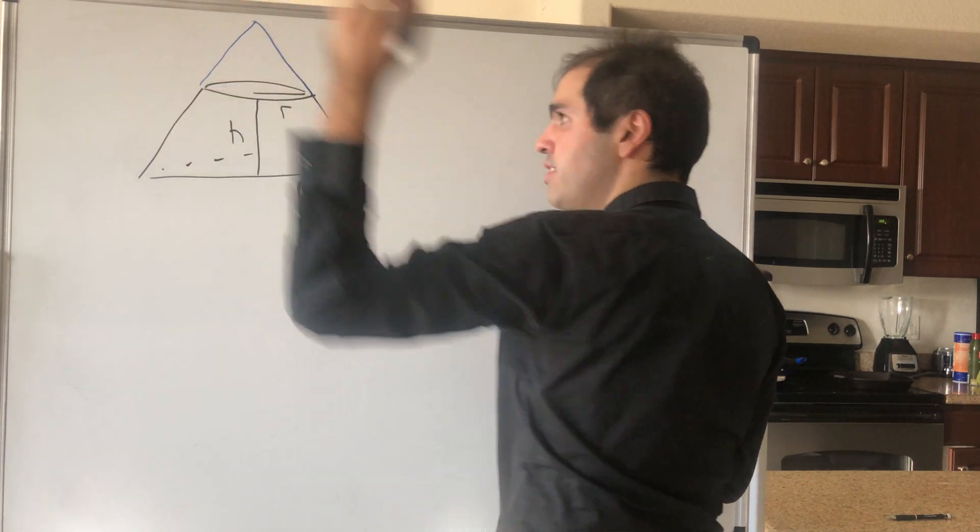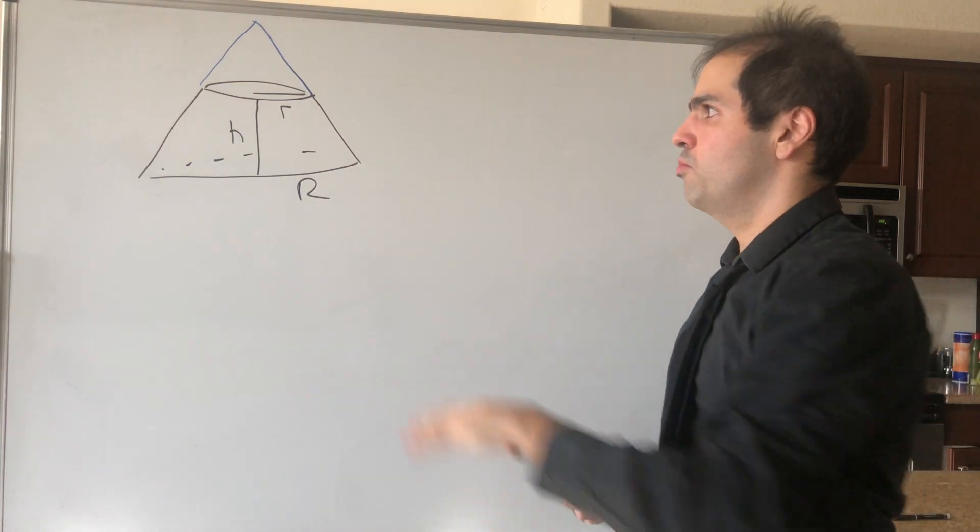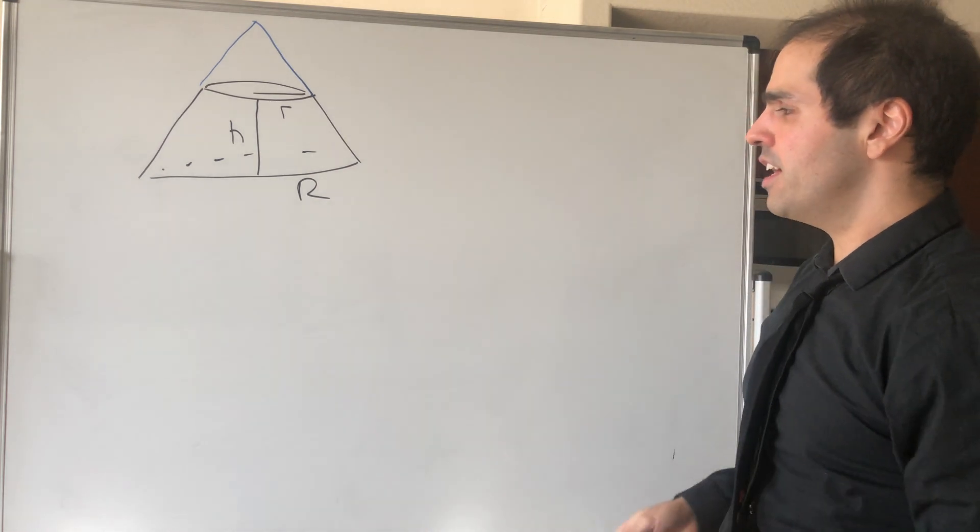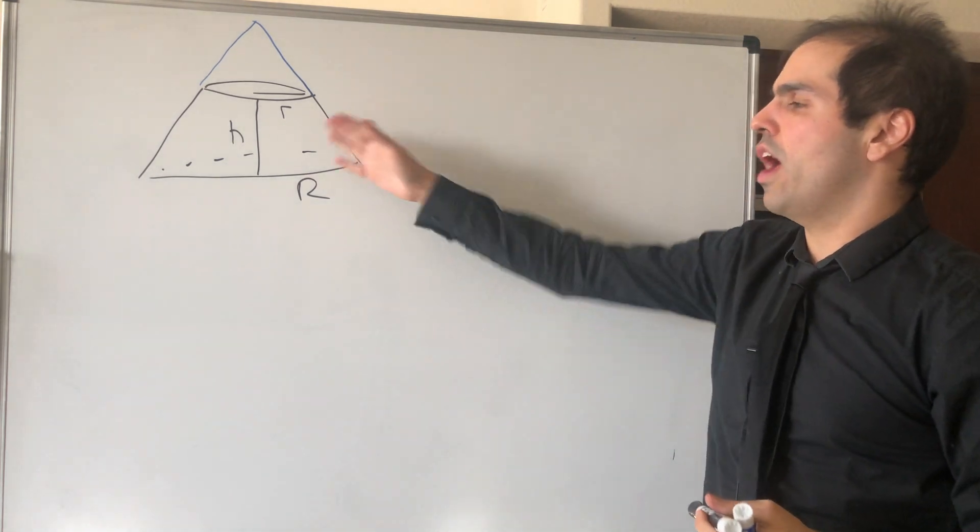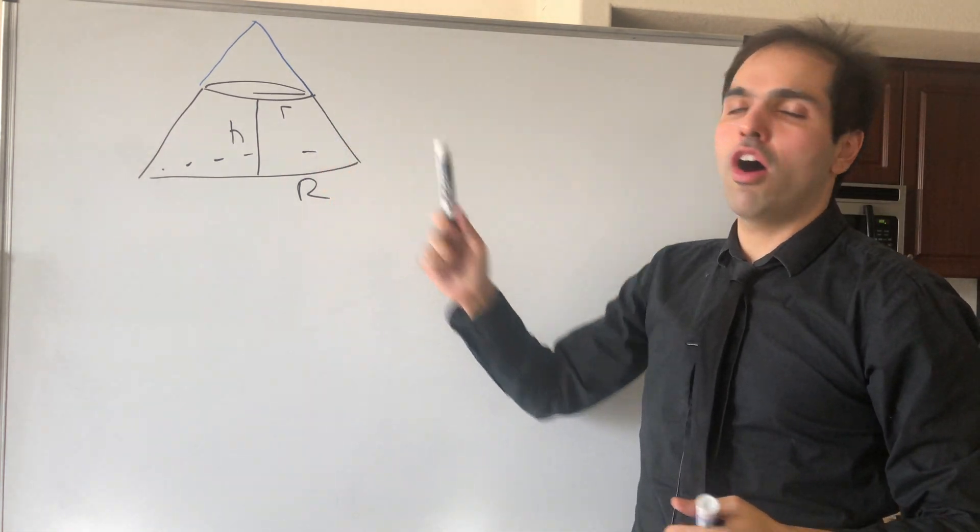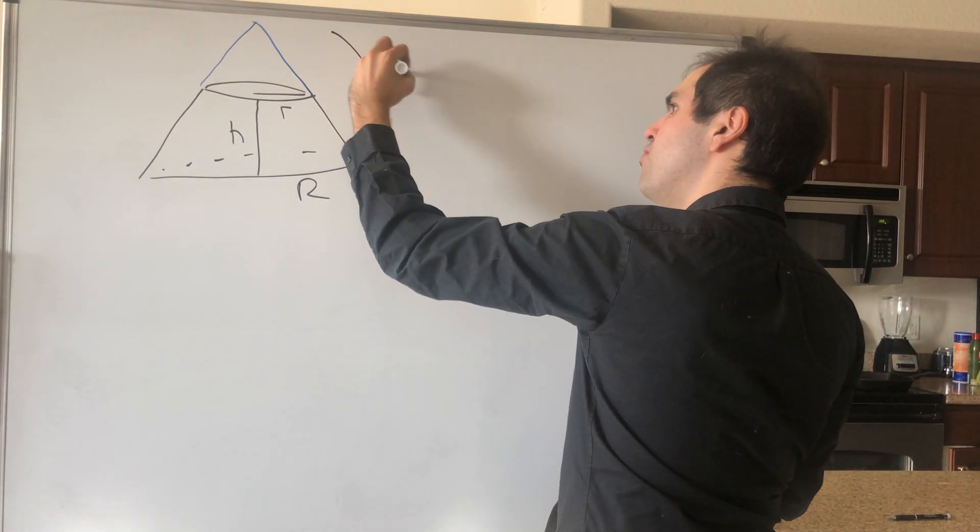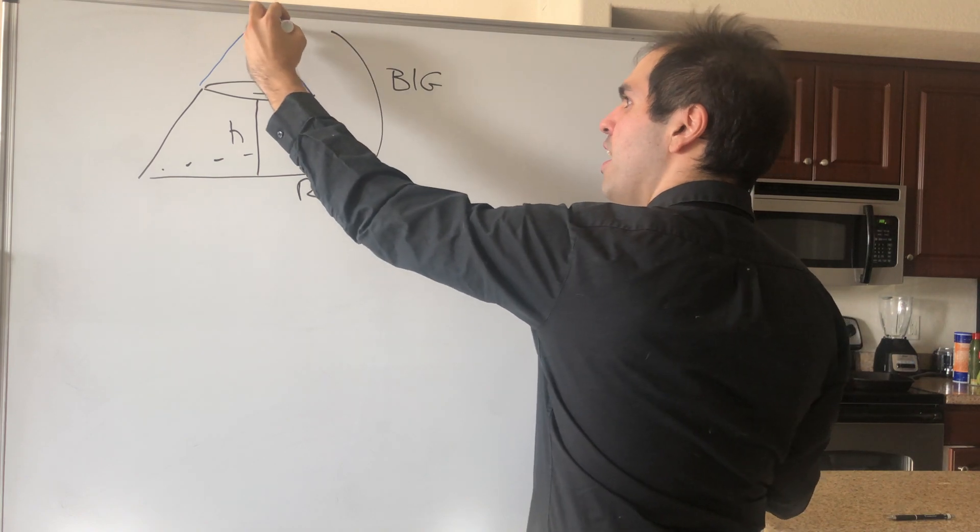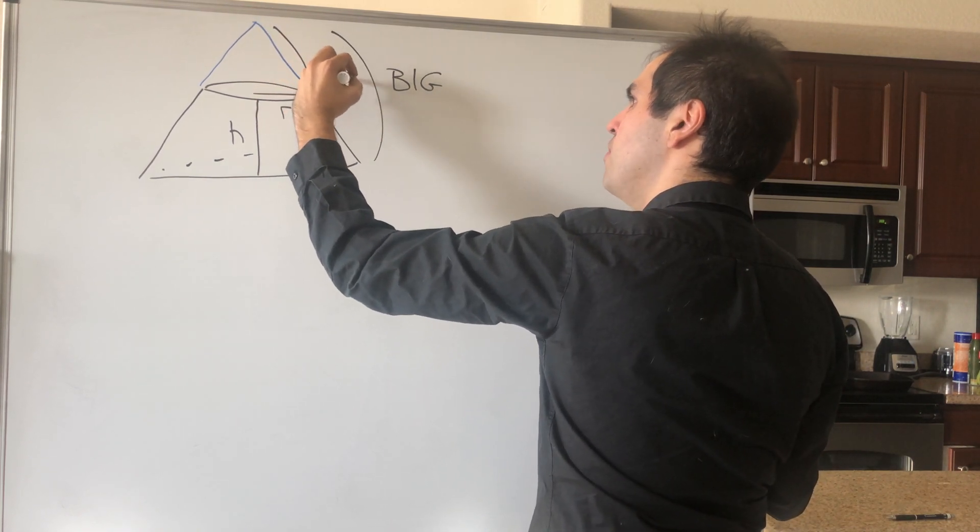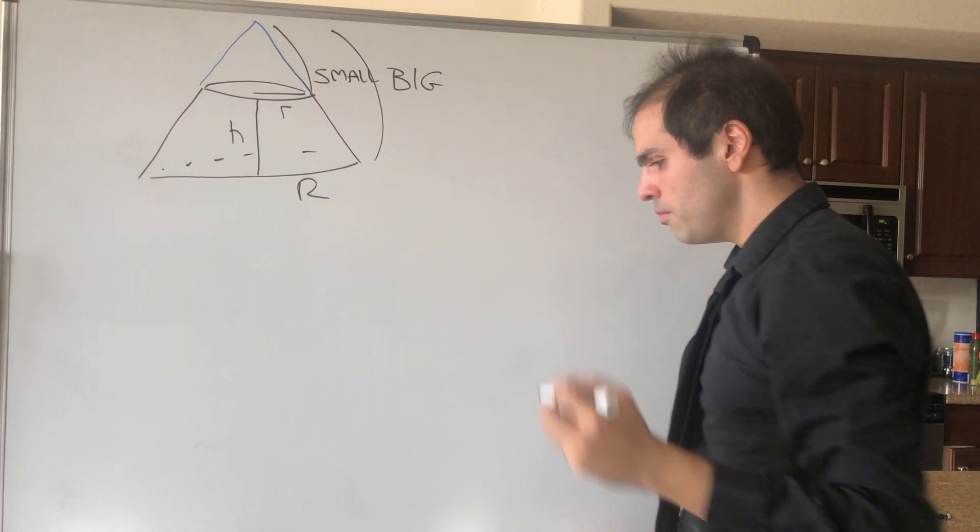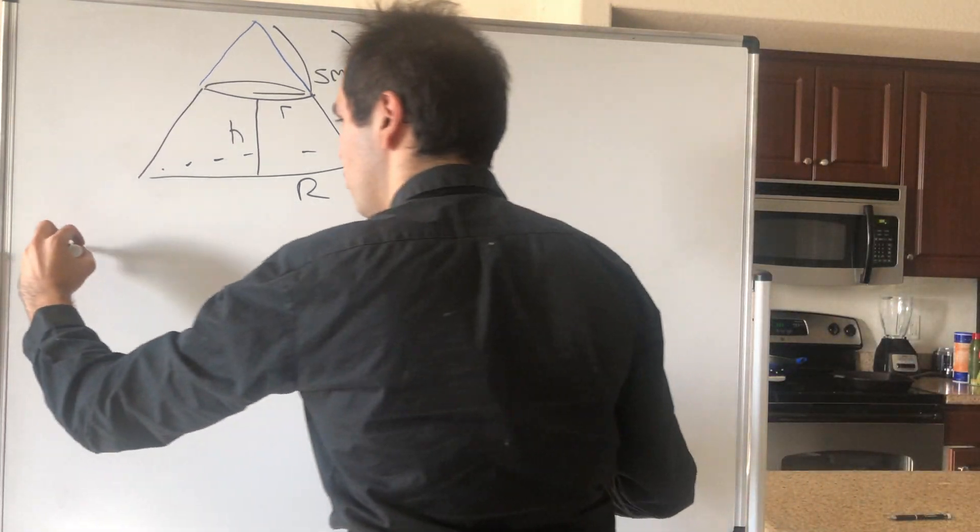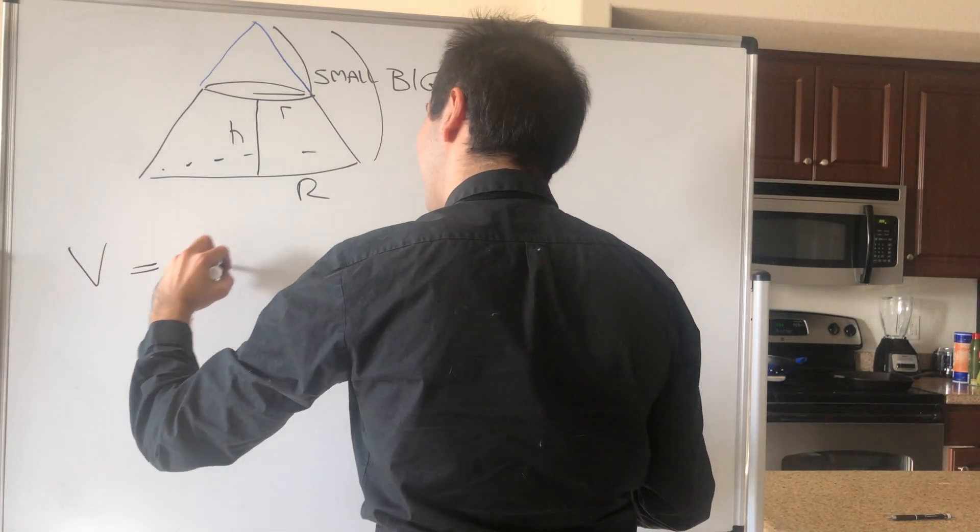So in particular, the insight is, well, to calculate the volume of this frustum, all you do is you calculate the volume of the big cone, and you subtract the volume of the small cone. So let's do that. So volume equals big minus small.